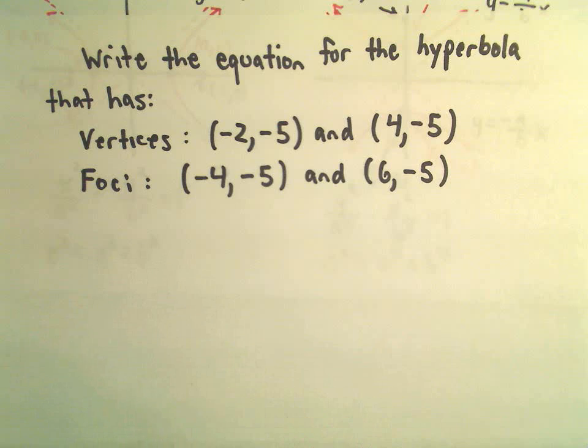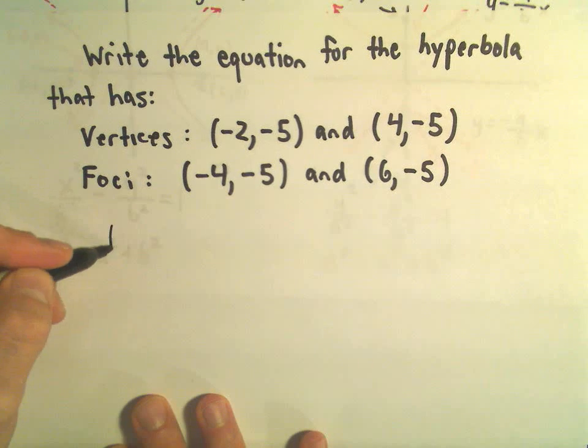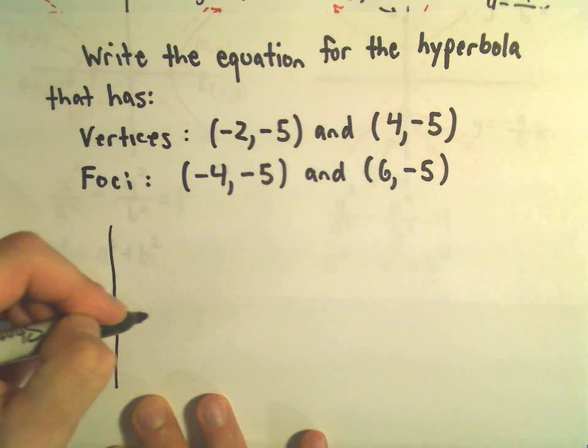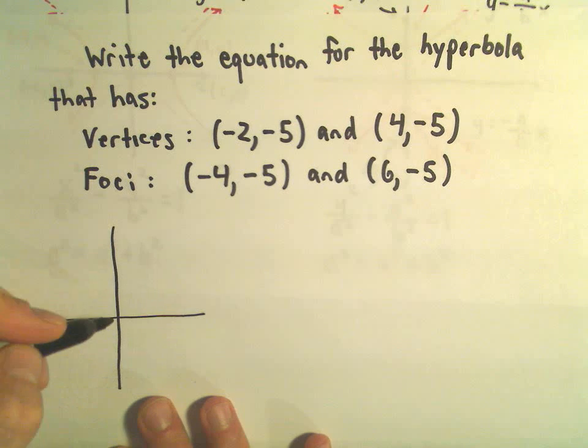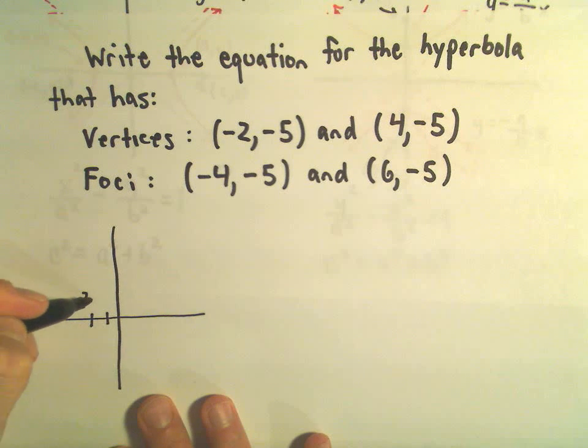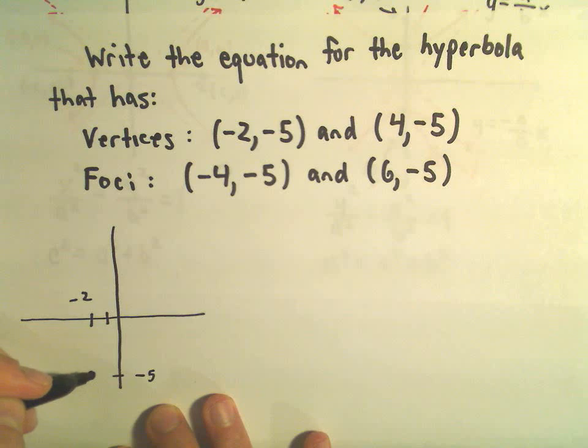So again, you don't have to do this at all. I always just like to make a little picture just to help orient myself and make some sense out of it. So let's see, we've got (-2, -5), that's going to be one of our vertices.